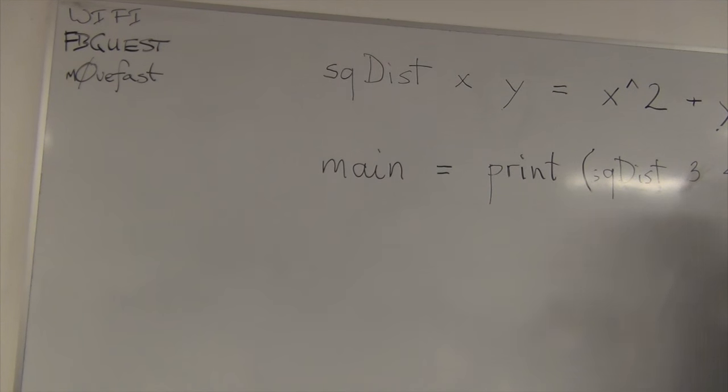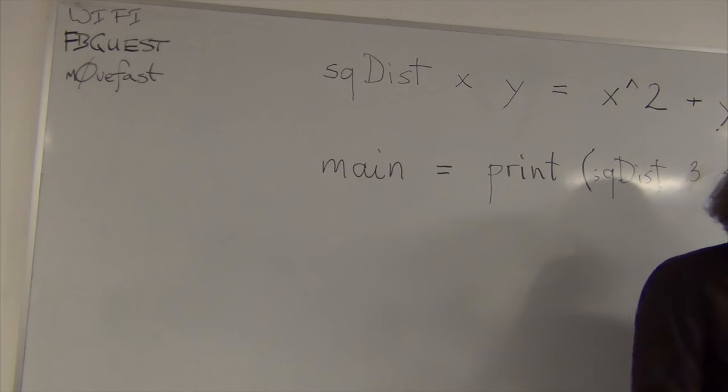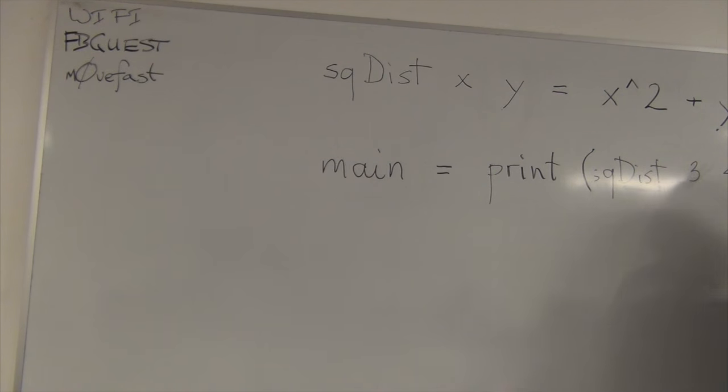So, the first thing is you can load a file into the interactive environment. And to load a file use colon L, right? Colon L main HS. This is the file that you are loading. Okay. And it immediately compiles it and says, okay, fine. If it says, if it doesn't show you any errors, it means the file actually compiled. No compilation error. At the moment of loading, it's immediately compiled.